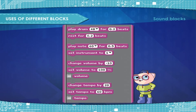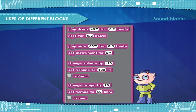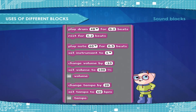Change volume by — changes the volume by the amount. Set volume to — sets the volume to the amount. Change tempo by — changes the tempo by the amount. Set tempo to BPM — sets the tempo to the amount.